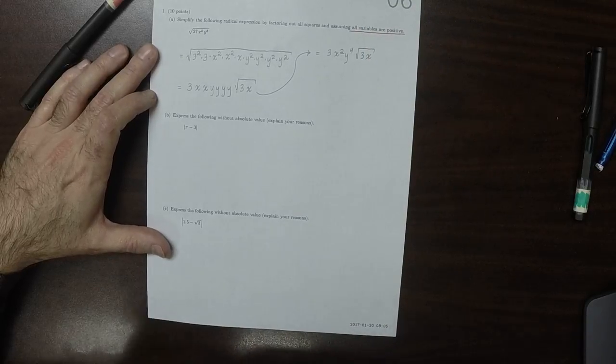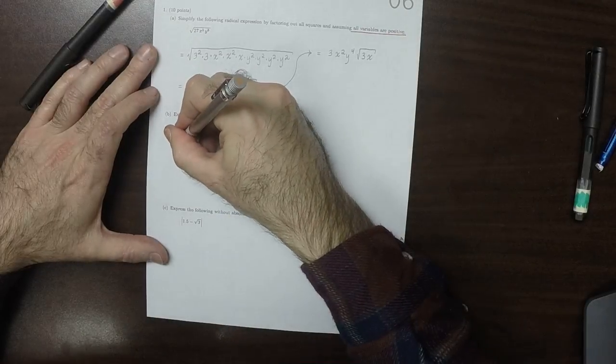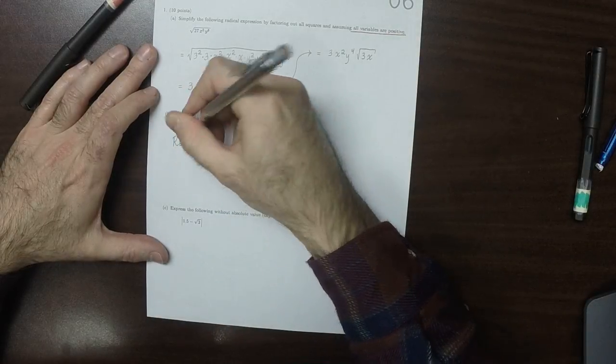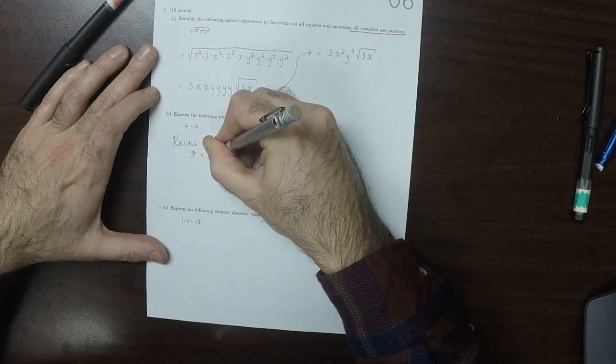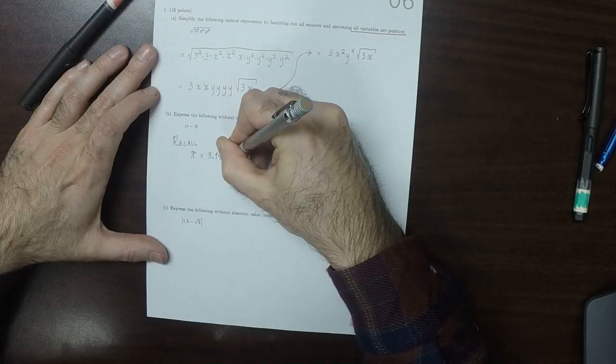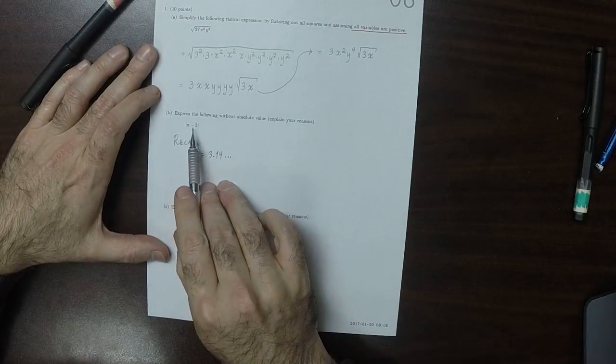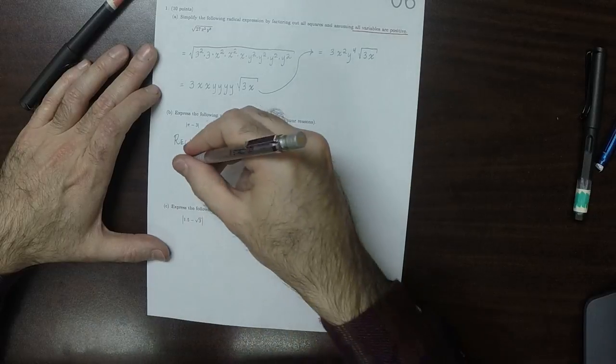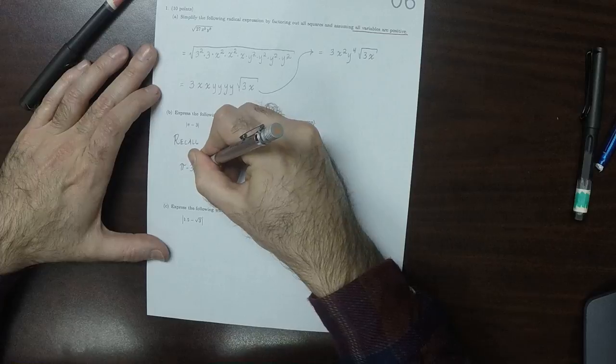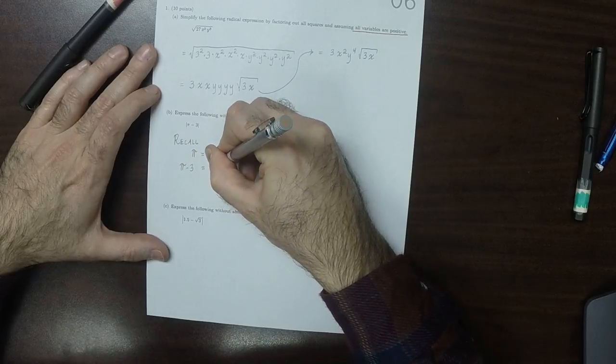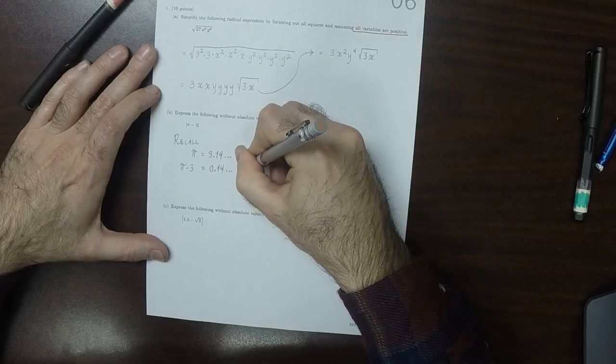Okay, and part b. The main thing is to recall that pi starts out with 3.14 dot dot dot. So that means that pi minus 3 is 0.14 dot dot dot, which in particular is a positive number.